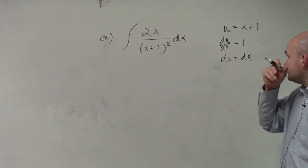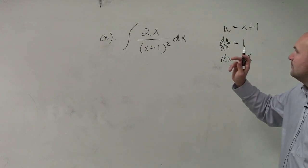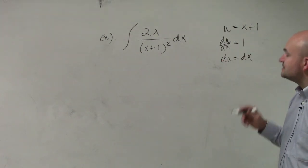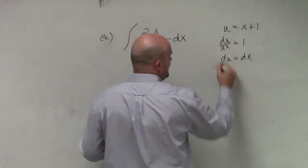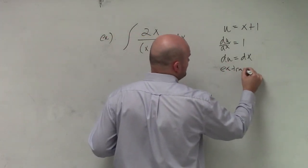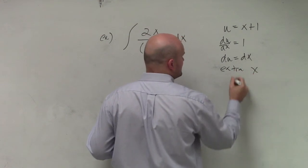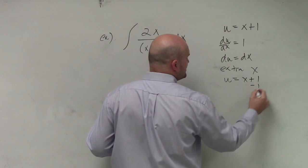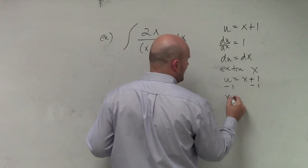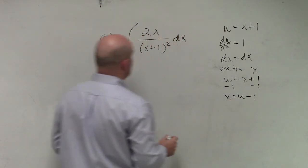But one thing we notice is that we have that extra x. So the extra x, I'm just going to write that out there, extra x. And therefore, I could say that u equals x plus 1. And I just want to solve for x. So therefore, x equals u minus 1.